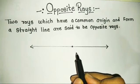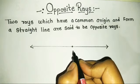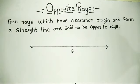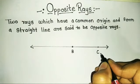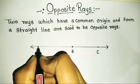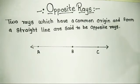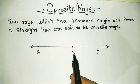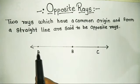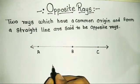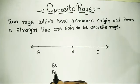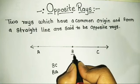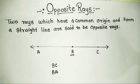So we have two rays which have a common origin - the origin point B is common. C is one direction and A is another direction. Point B is the common point.